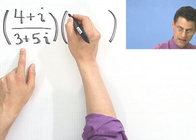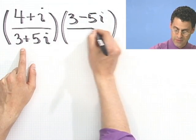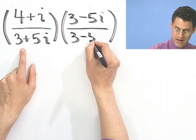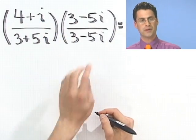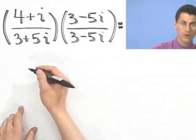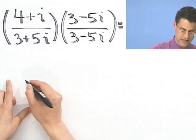So how would that look? I would have a 3 minus 5i. That's the conjugate of the bottom. And 3 minus 5i. So it doesn't change the value. But now what happens when I multiply this through? I have to multiply the tops and I have to multiply the bottoms. So this is going to be a whole bunch of foiling, like we just talked about, in terms of multiplying complex numbers. So let's take a look at how that would work.